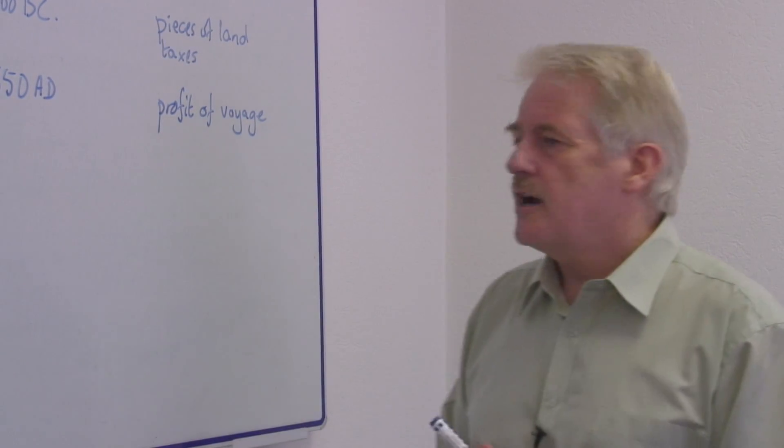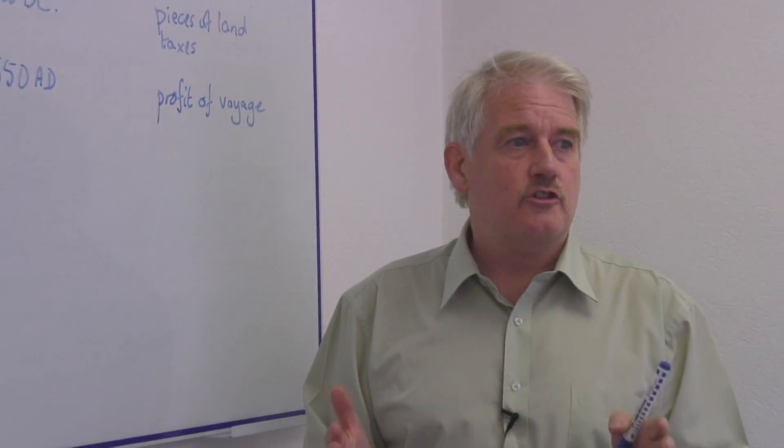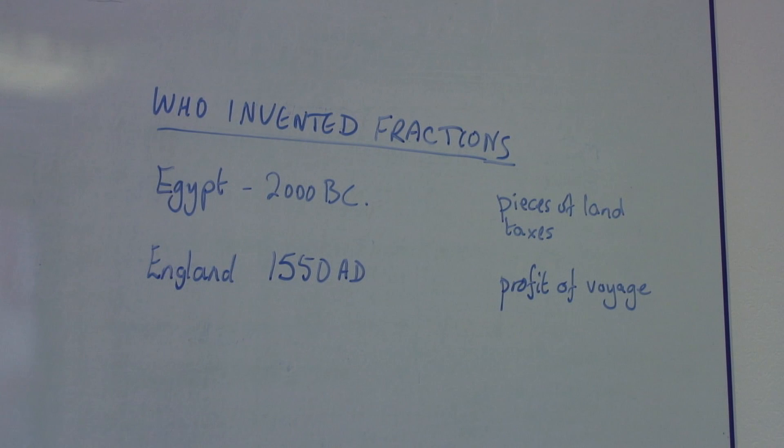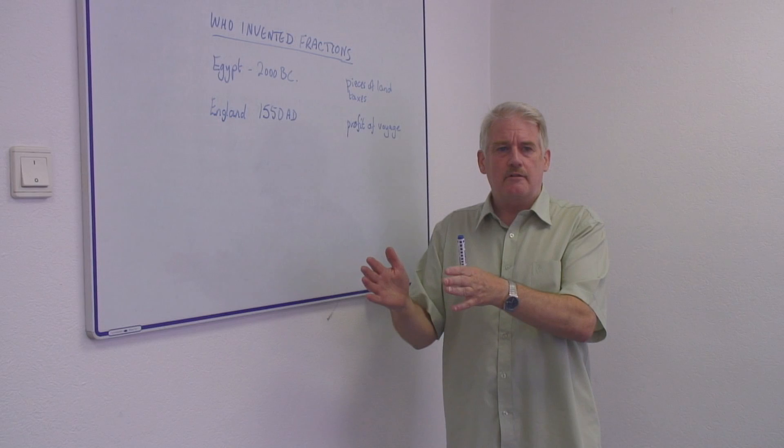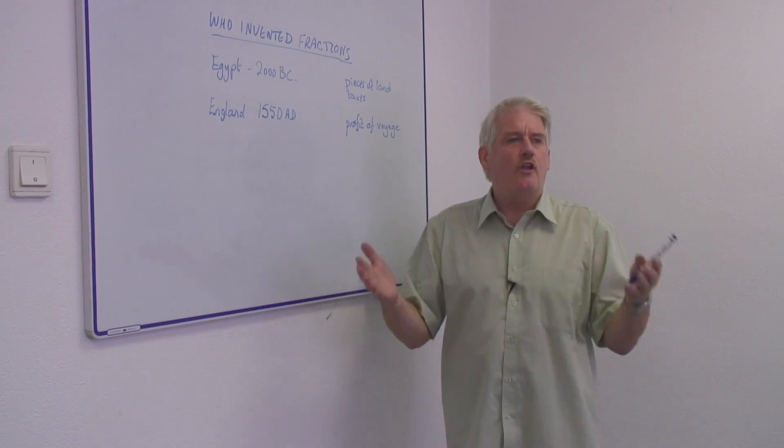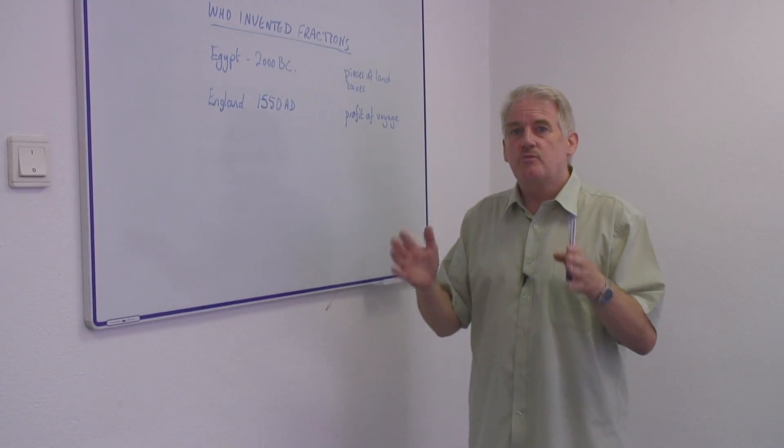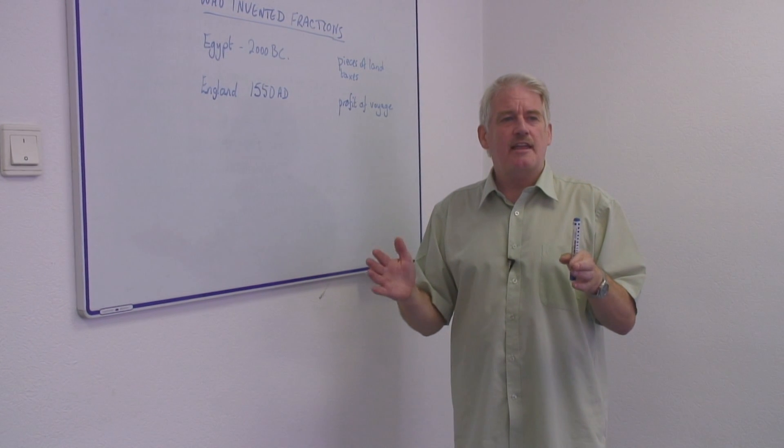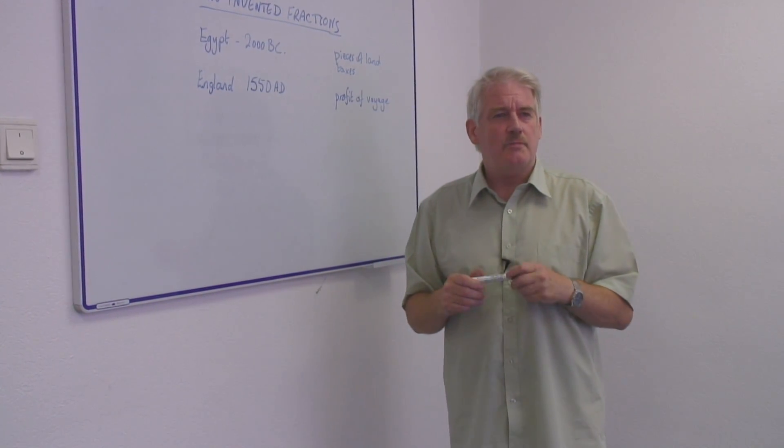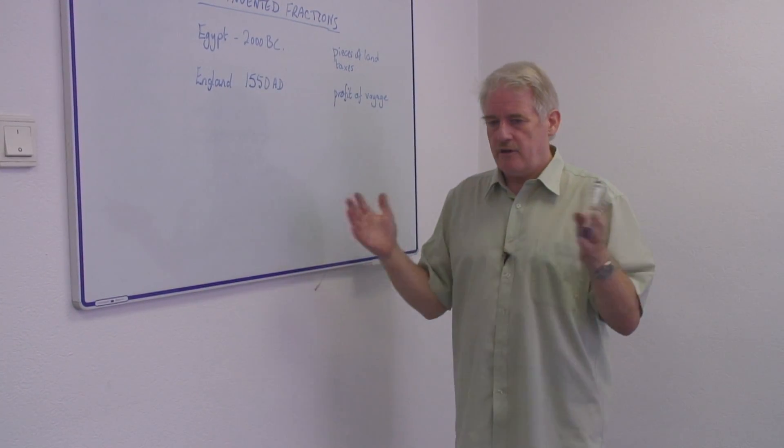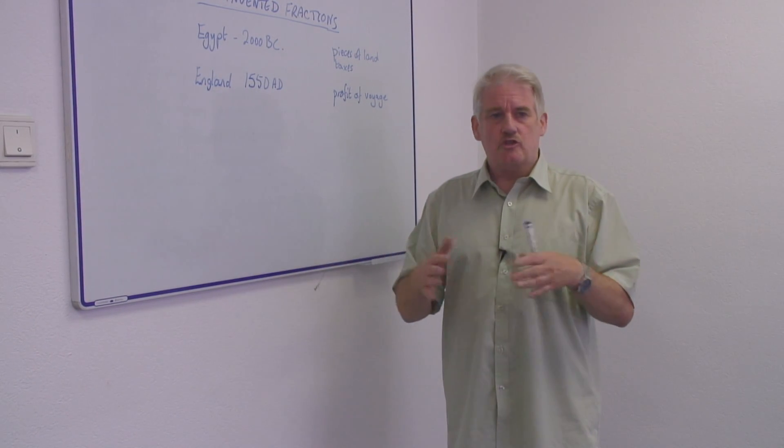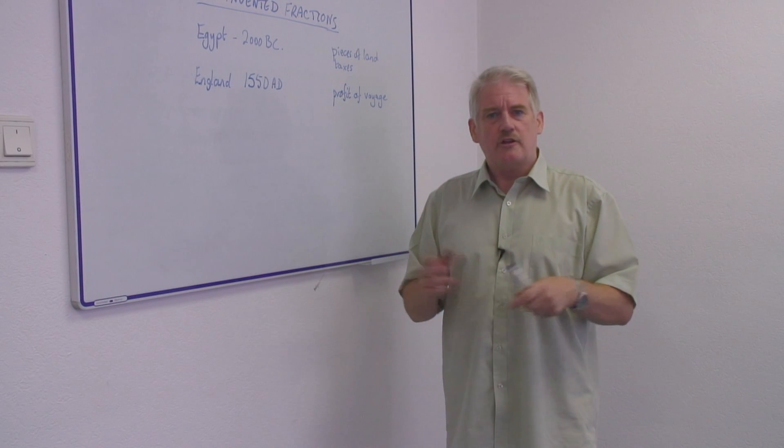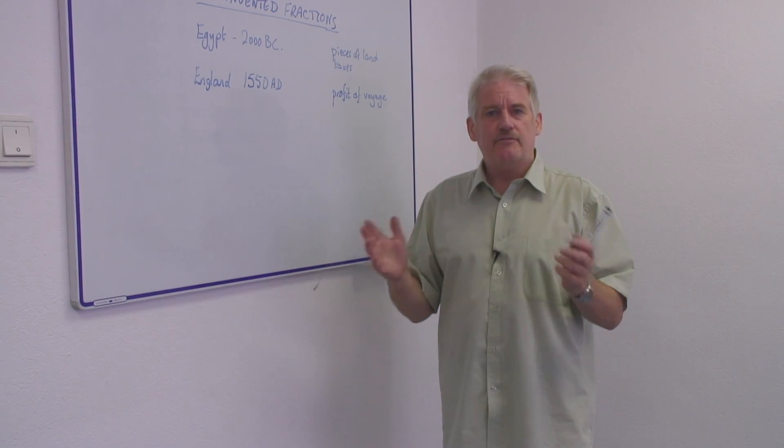So sometimes one person would have a fraction of a half of the profits, or maybe a quarter of the profits, or an eighth, or a sixteenth, or a thirty-second. But it was all done on fractions, because with fractions, you didn't have to say how much money the trip was going to make. If it made a lot of money, the fraction was bigger. If it was making just a smaller amount of profit, the fraction was smaller. A very efficient system.